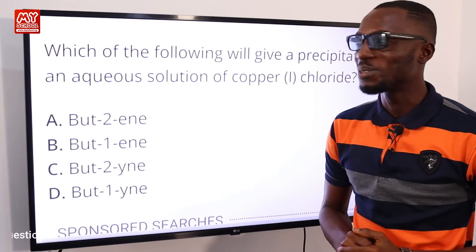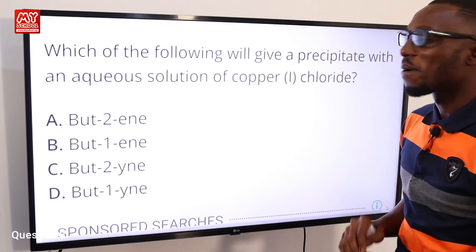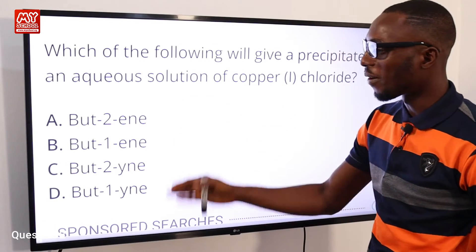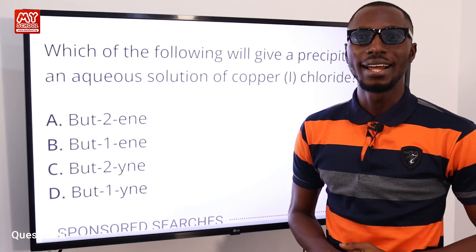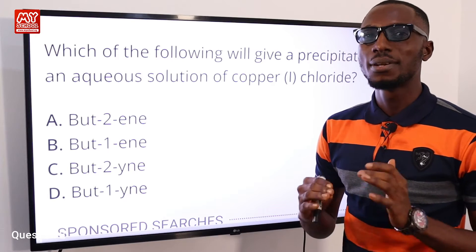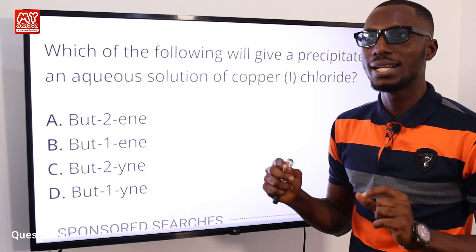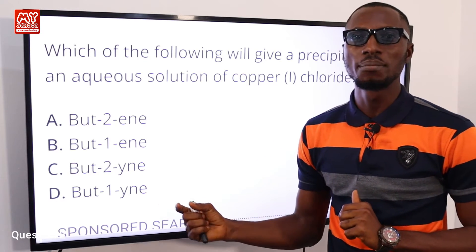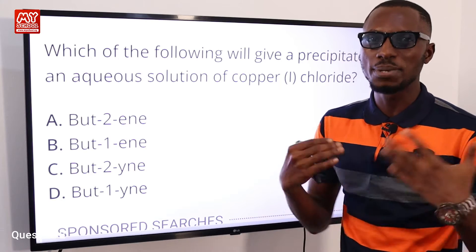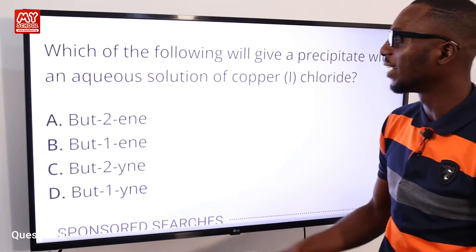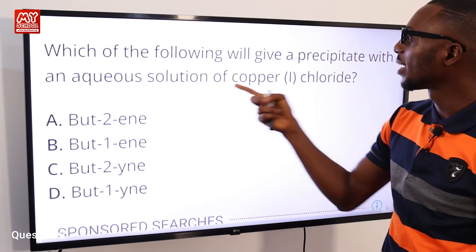Question two: which of the following will give a precipitate with an aqueous solution of copper(I) chloride? Looking through the options, option D — but-1-yne — is actually an alkyne which has its triple bond attached to the last (first) carbon atom. The hydrogen attached to that terminal carbon atom is susceptible, so most reactions including substitution will take place there. Definitely a precipitate will be formed with but-1-yne in an aqueous solution of copper(I) chloride.